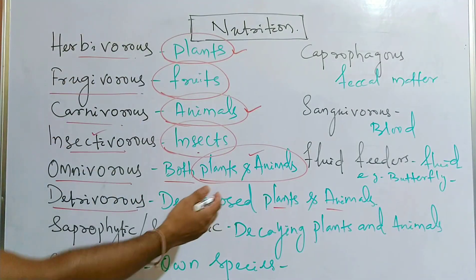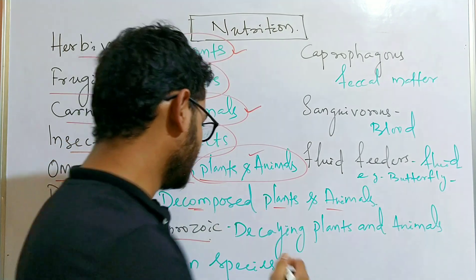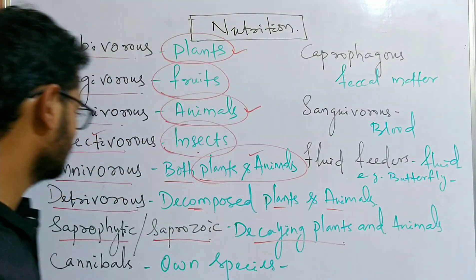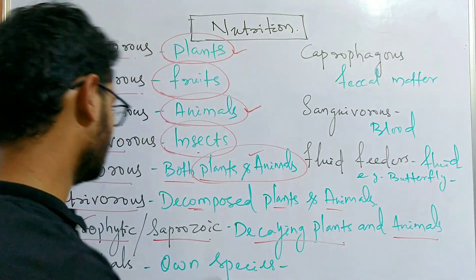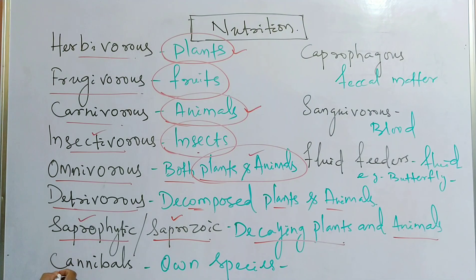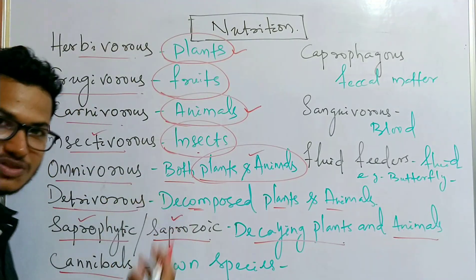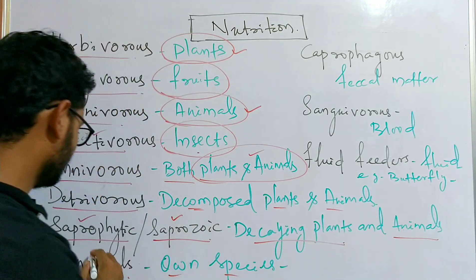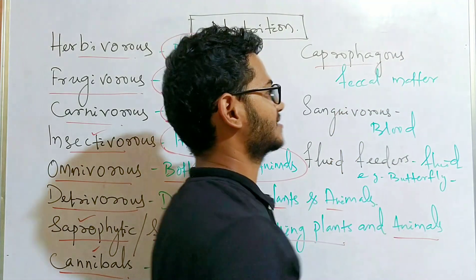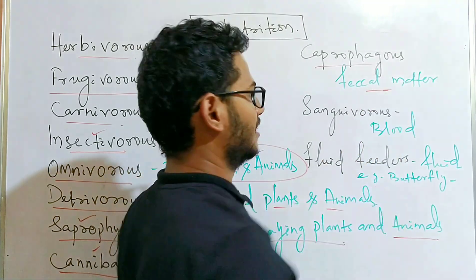Detrivores use decomposed plant and animal fragments as their food. Saprophytic organisms feed on decaying plants, and saprozoic organisms feed on decaying animals. Cannibals are organisms that feed on their own species — we have seen them in movies. Coprophagus organisms eat faecal matter as their food.